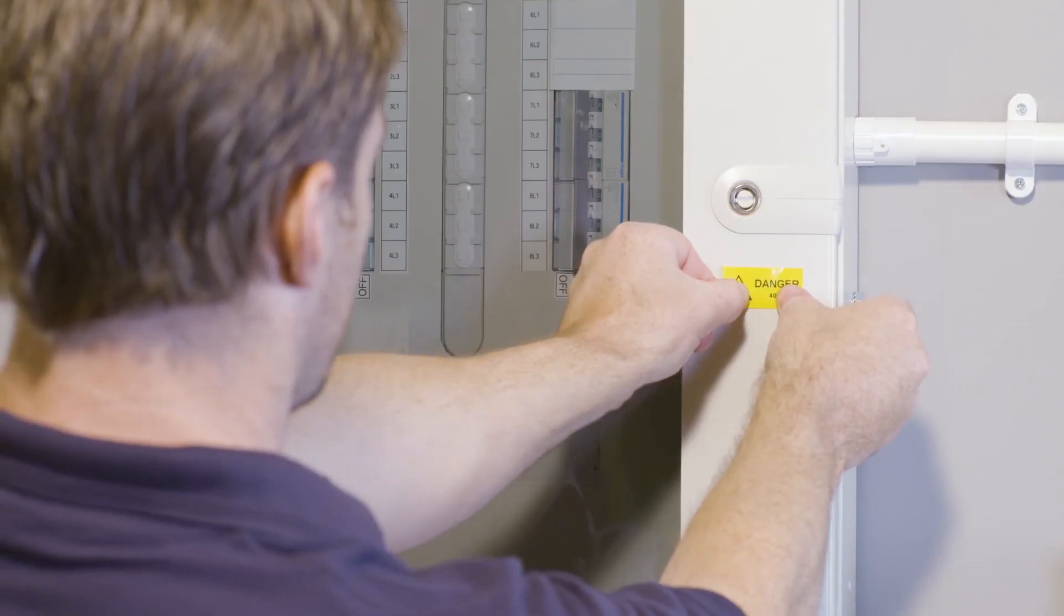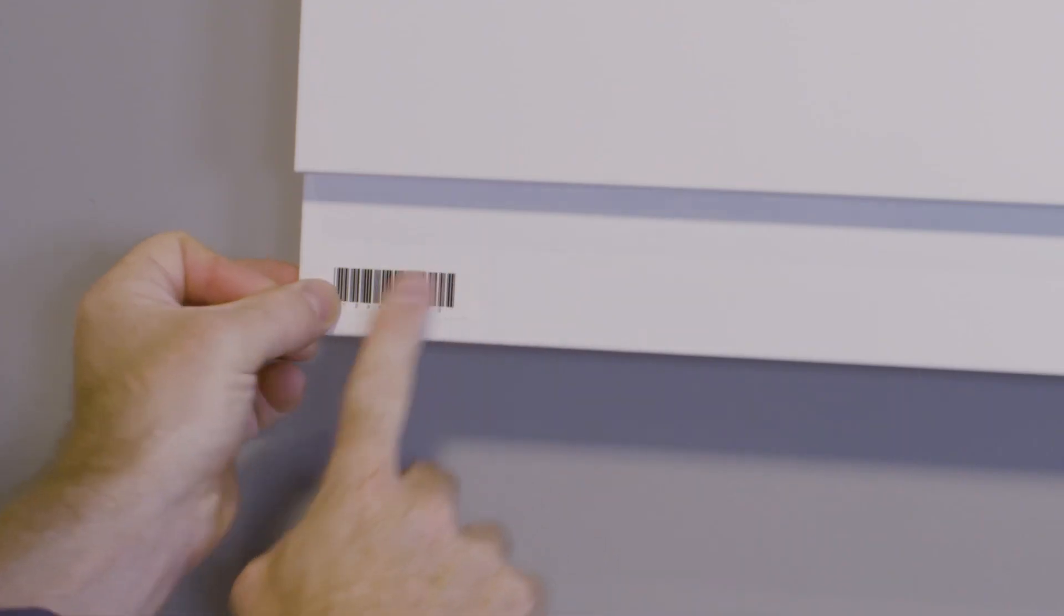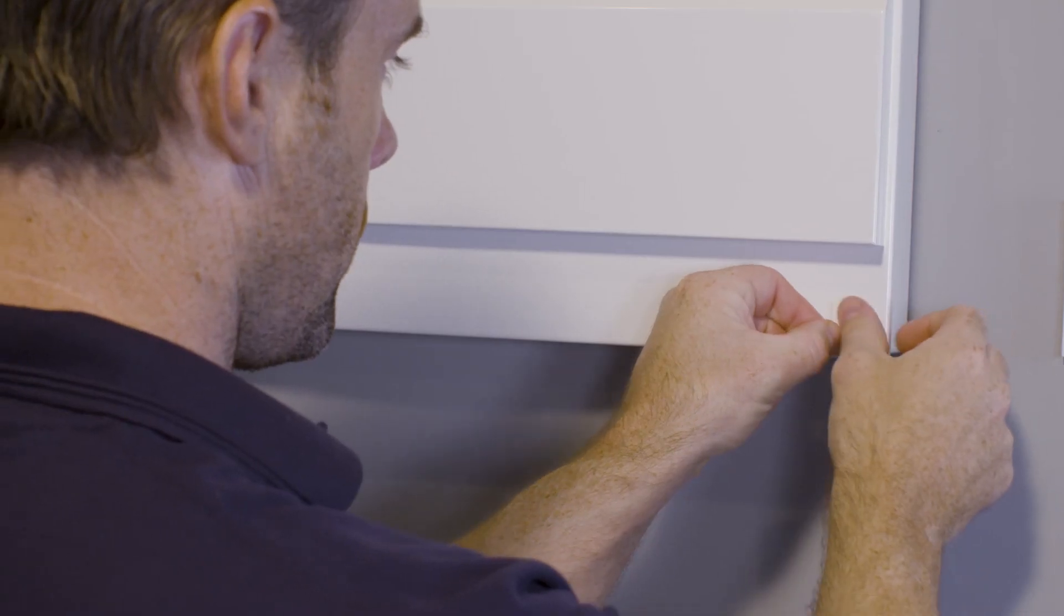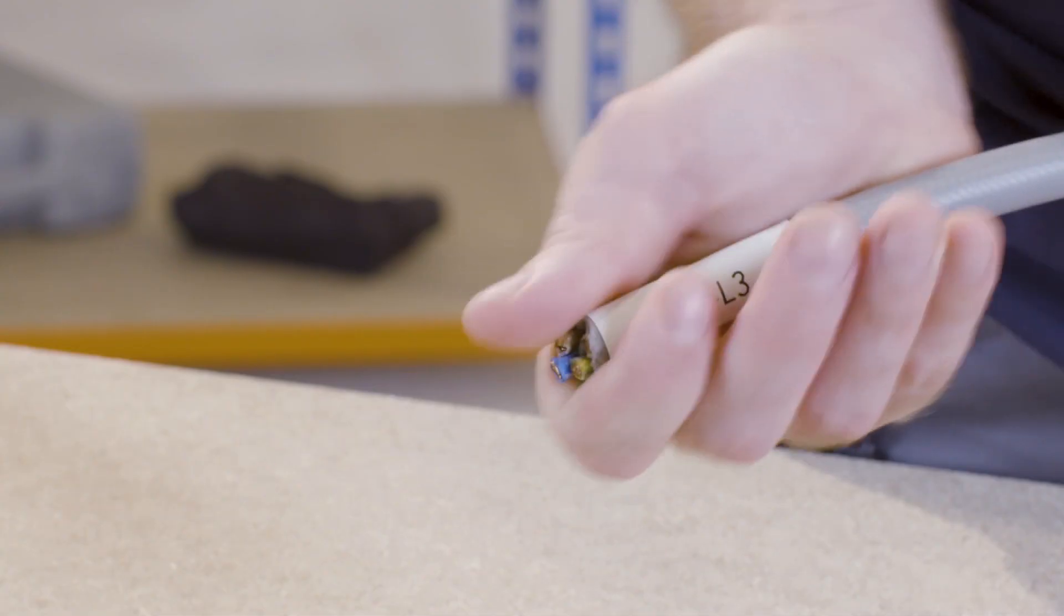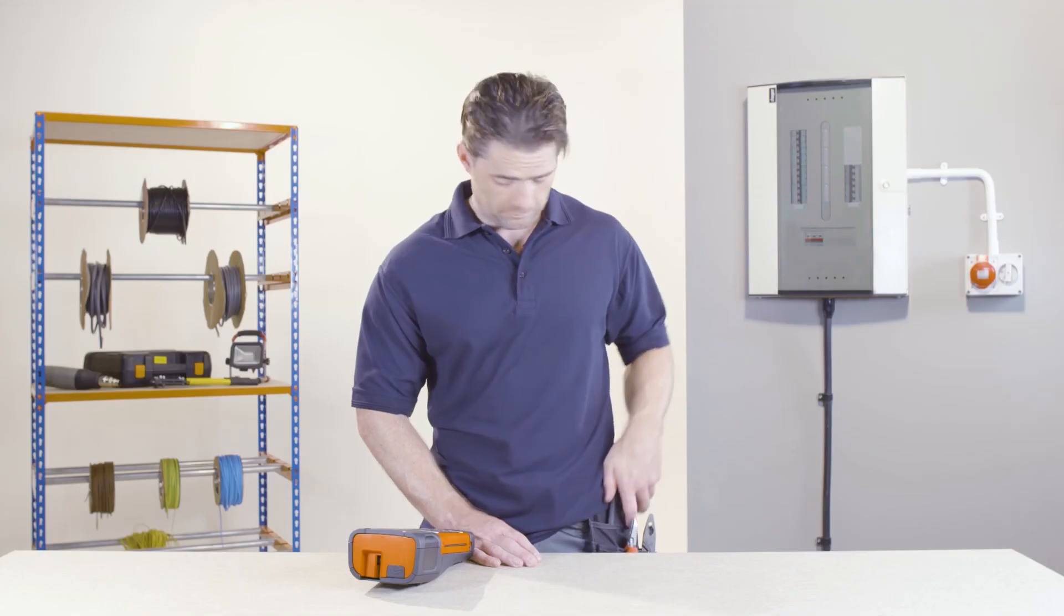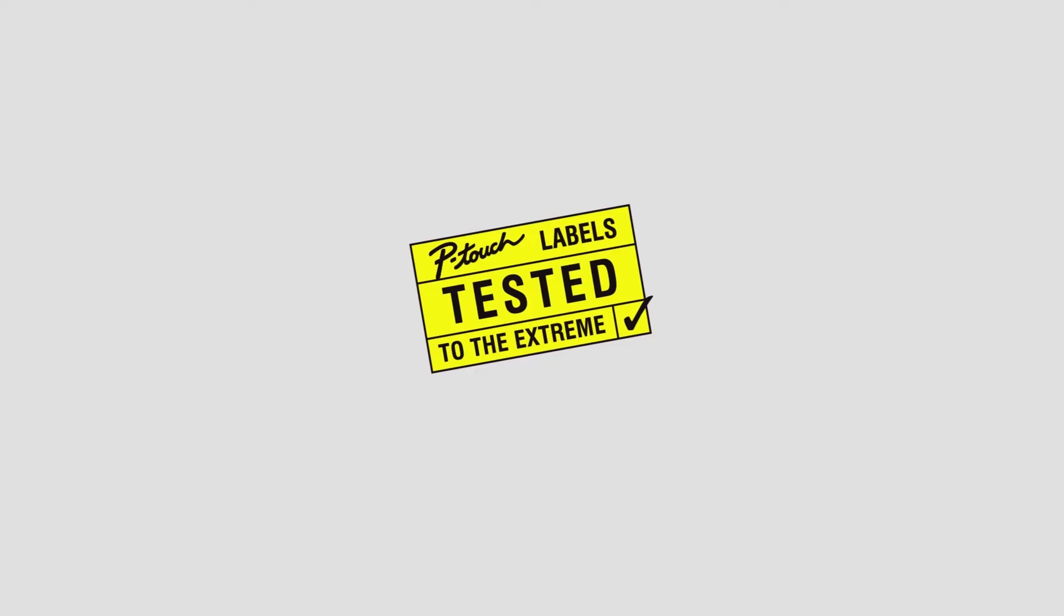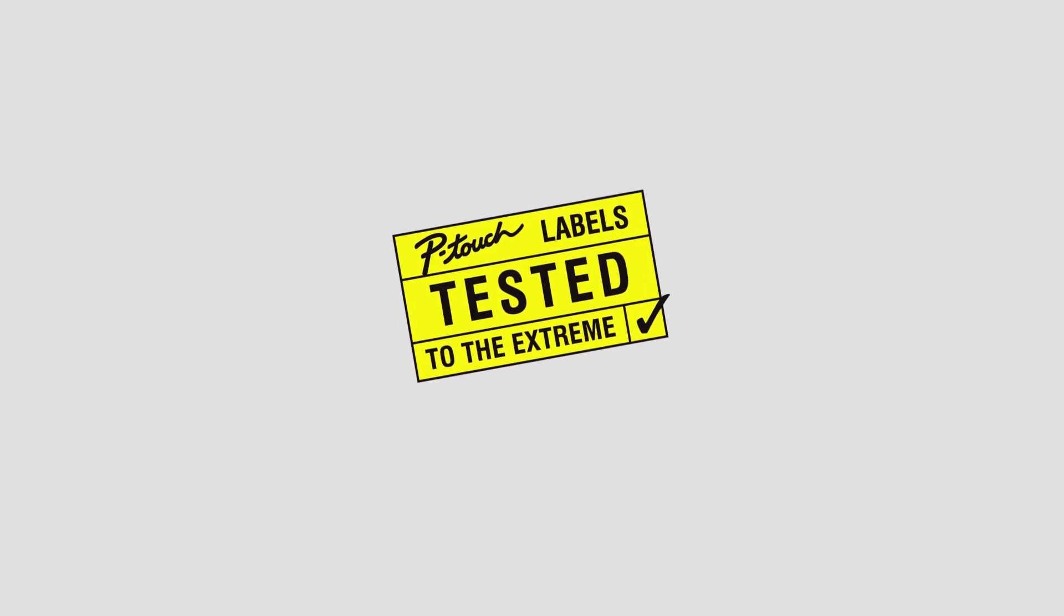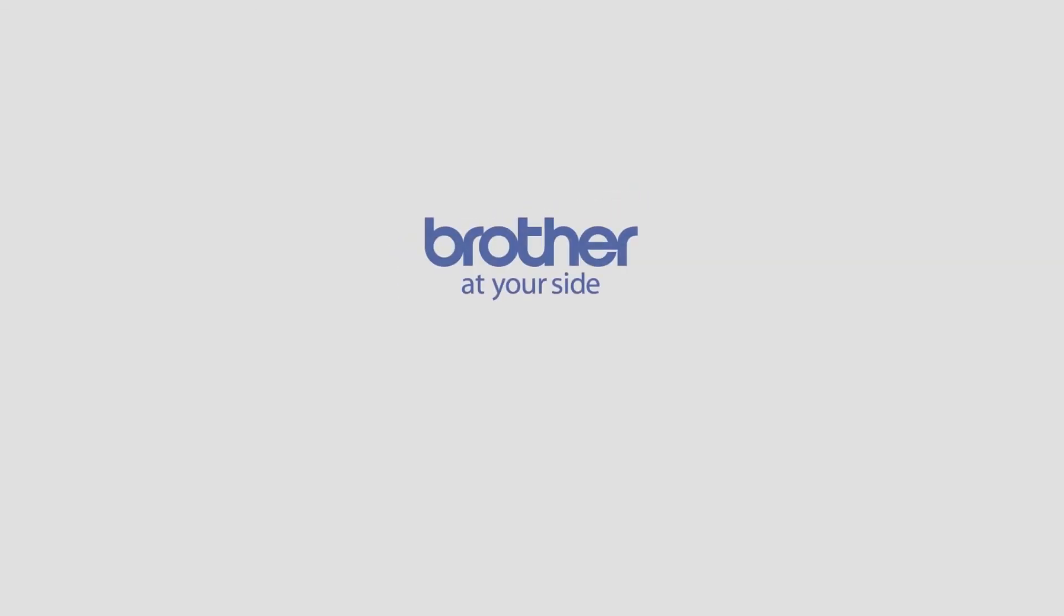TZE tapes are available in a range of widths, colors, and materials including laminated, strong adhesive, flexible ID, and heat shrink tube. For further assistance, please check out the other instructional videos in the series or see the inbox guide for more details and other functions.